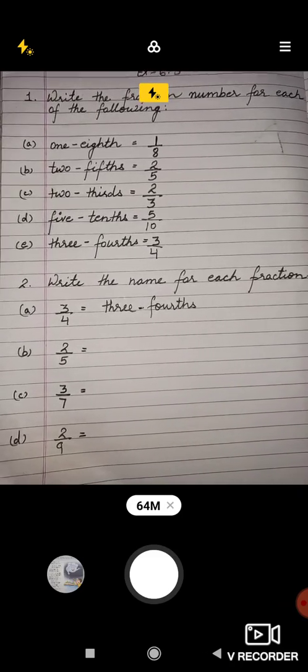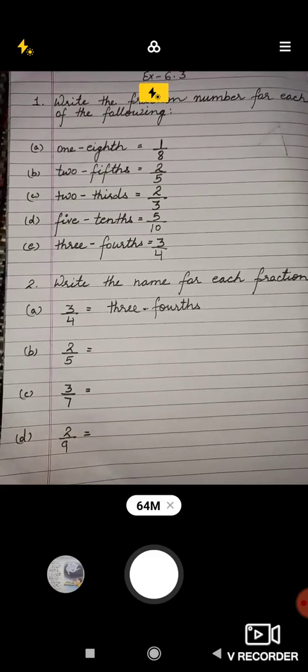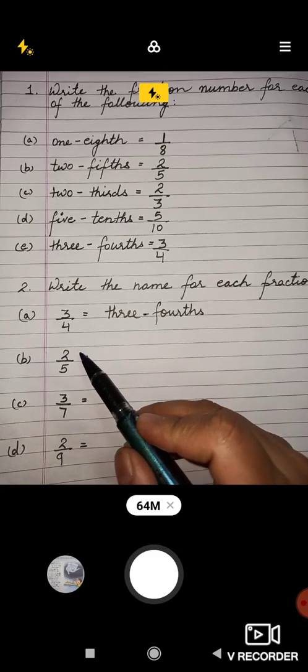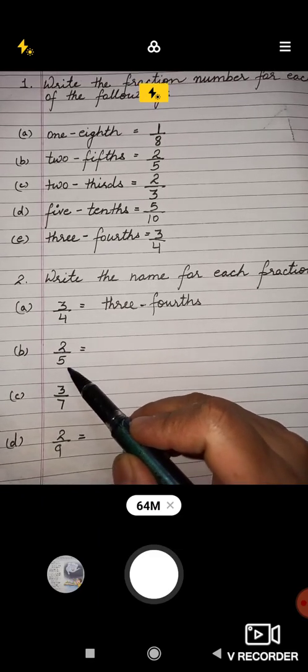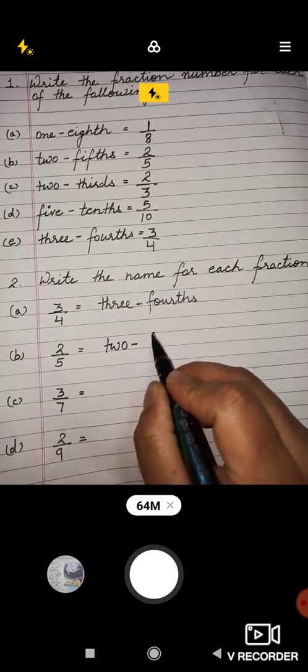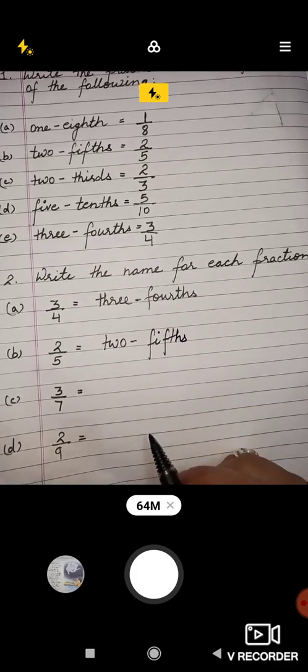So now two upon five is the fraction, so you will write first two, then fifths, F-I-F-T-H-S, fifths. Then three upon seven, so you will write three-sevenths, S-E-V-E-N-T-H-S, sevenths.